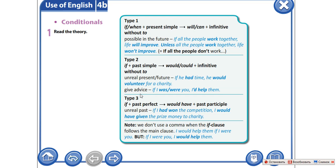Второй тип условного предложения мы используем когда даем какой-то совет, или же говорим о том, что могло бы произойти — то есть что-то нереальное. Например: if he had time, he would volunteer for a charity — если бы у него было время, он бы вызвался волонтером благотворительности. Или же мы даем совет: if I were you, I'd help them. Обратите внимание, что здесь можно сказать как if I was you, так и if I were you — если бы я был на твоем месте, я бы им помог.